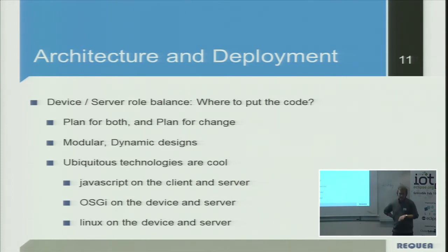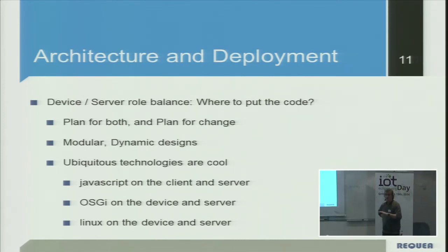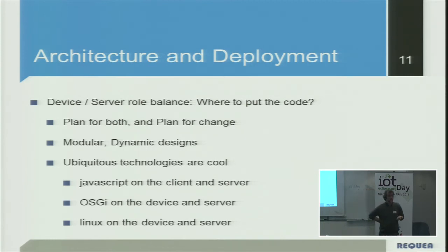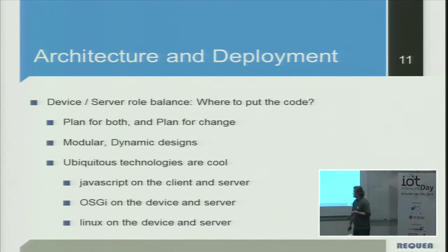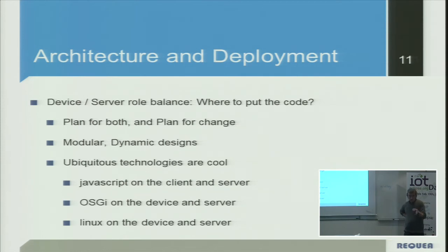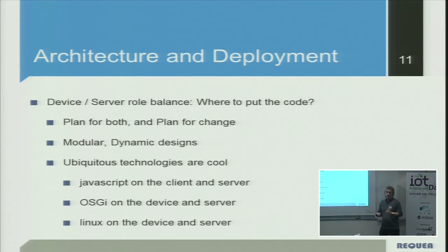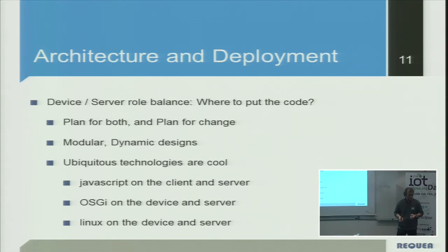Modular, ubiquitous technologies are useful because if they can run on a device, they can run on the server, and you can move code, optimizations, components, and algorithms back and forth. JavaScript was designed for the client, but is increasingly used on the server with Node.js. We've embedded JavaScript on our platform for a long time. OSGi on device and server similarly allows code to be deployed on the device, moved to the cloud for cloud-based service interaction, or back to the device. Linux too runs on both.